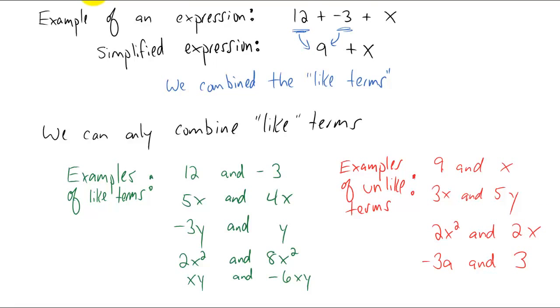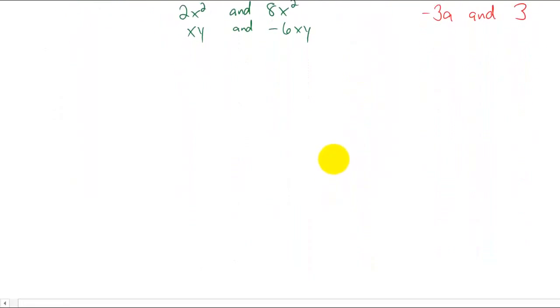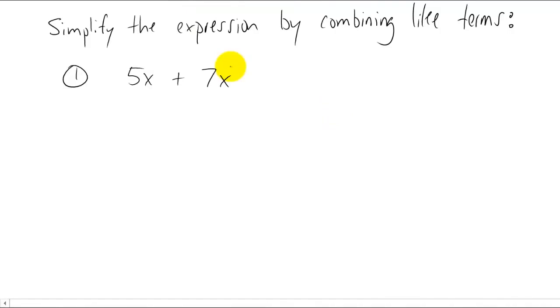Okay, let's look at some expressions and see if we can simplify some expressions by combining like terms. The first expression I want to look at is five x plus seven x. You'll notice that five x and seven x are like terms because they both have the variable x raised to the first power. So how do we combine them?